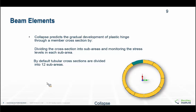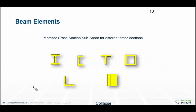The development of the hinge through the cross-section is taken into account by subdividing each section type into what we call sub-areas. For a tubular section, we subdivide that into 12 sub-areas and then monitor the stresses in each sub-area. As soon as that exceeds plasticity, we make the whole sub-element length elastic. We do similar things in Collapse for other section types, all divided into little sub-areas to ensure a gradual formation of the hinge.